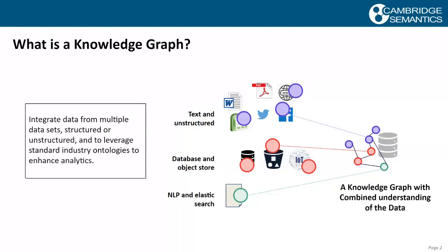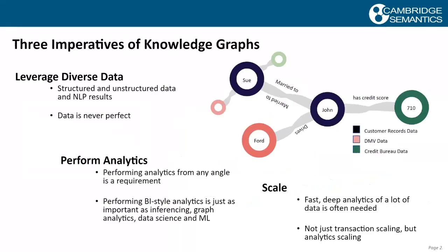That data may come from text or unstructured data, from a standard Oracle database, an object store like an S3 bucket, Elasticsearch, or NLP processing. We've been trying to do this for a long time — with data lakes, with data warehouses. But this is a new, superior way to create a knowledge graph and integrate these data sources together. Data is never perfect — there are nulls and data that doesn't conform to standards.